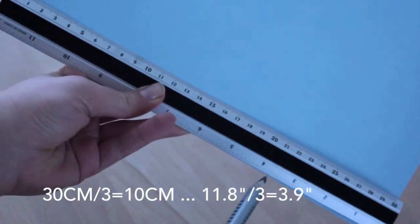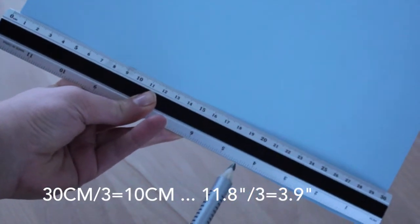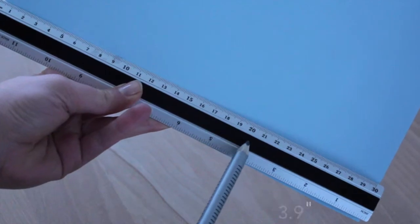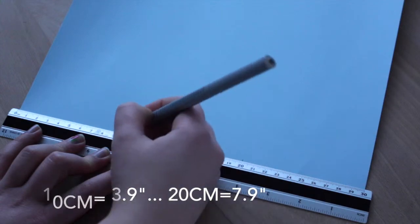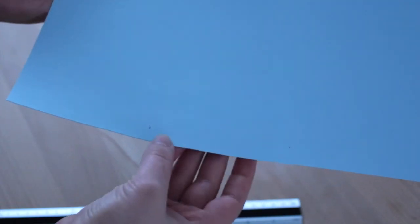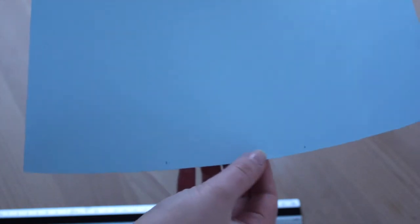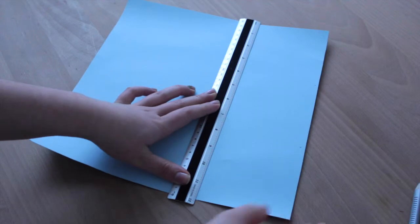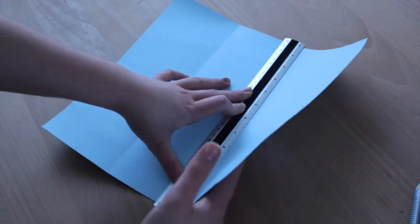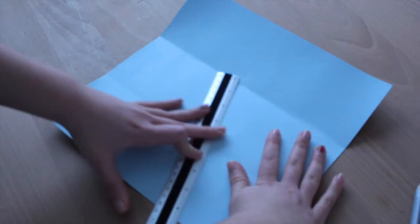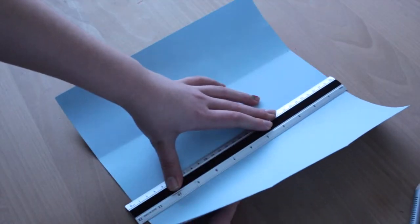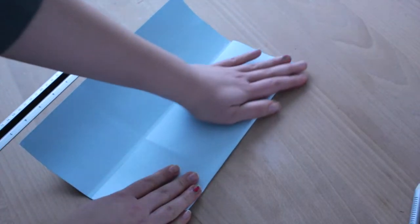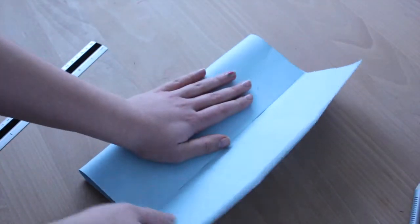First of all, we need to divide the length by three, so that's 10 centimeters. Make a marking at 10 and 20 centimeters on two of the square sides. Then place your ruler on top of the markings and fold the paper over it. Then fold the paper by following the score lines to make them more obvious.